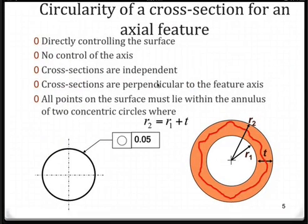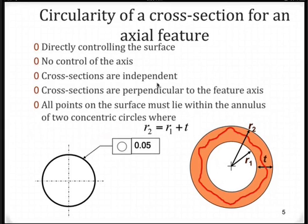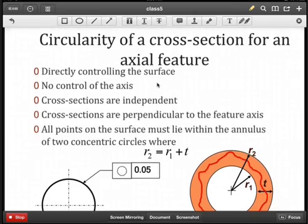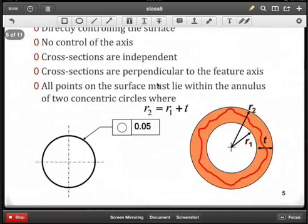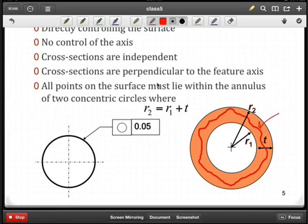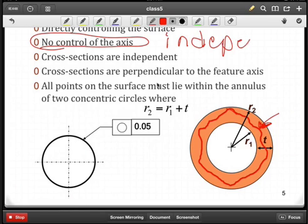If we look at circularity of a cross section, so we're going to take one specific cross section of, let's say, an axial feature, then what we're doing is we're having direct control over the shape of the surface. And we can see that here in this 2D annulus that we have. And this red, wiggly red line here represents the actual surface. And as you can see, we have deviations in that surface. Obviously, I've exaggerated that so you can see what could happen here. There's no control over the axis. Why is that? Because each cross section is independent of the previous cross section.